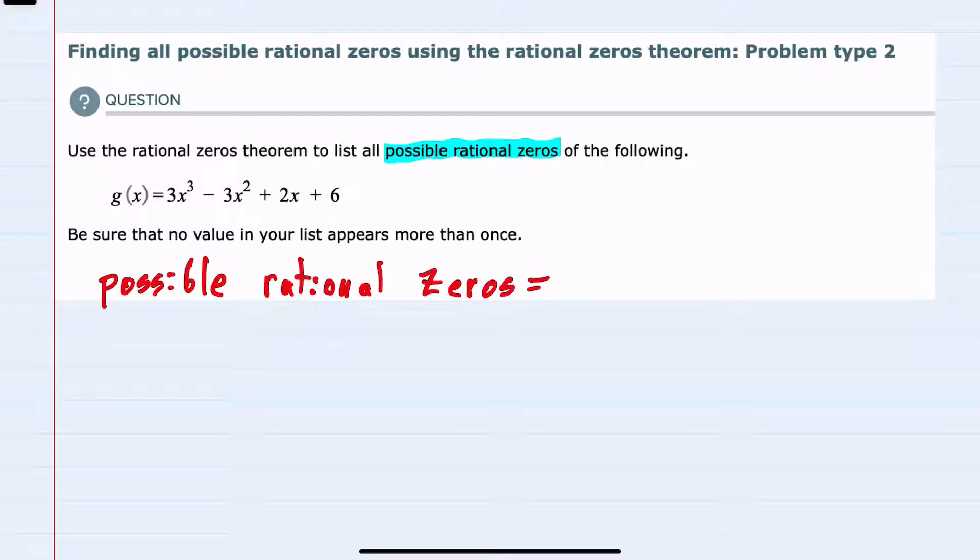We should recall that from the possible rational zeros theorem, all of our potential zeros would be in the form of p over q, where p is the factors of our constant term and q is all the possible factors of our leading coefficient.